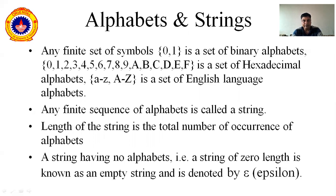If you are using A, B, C, 1, 2, 3, then the combination of A, B, C and 1, 2, 3 as a whole will give us a string. Always remember: a string is nothing but the use of alphabets in a particular order. A finite sequence of these alphabets is called a string, and the length of the string is the total number of occurrences of the alphabets. A string having no alphabet is called a null string. Always remember the string will be formed using alphabets, and alphabets are nothing but your 0 to 9 and A to Z and possibly some symbols.